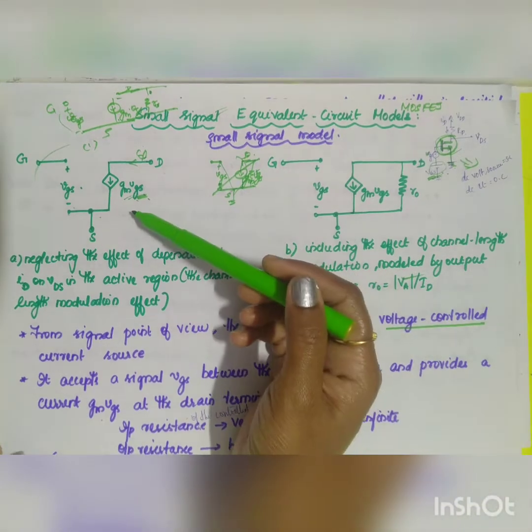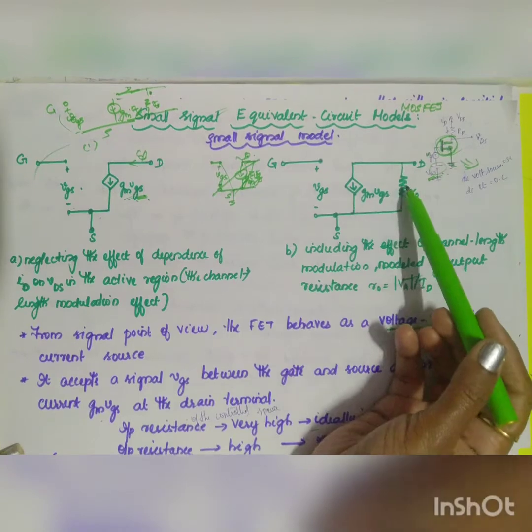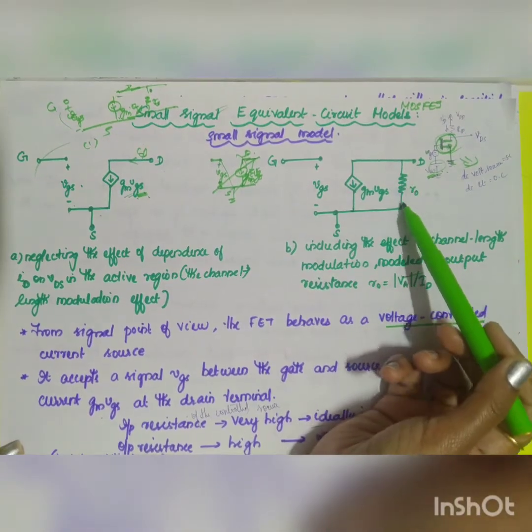From this diagram what you can infer? Is it a voltage control device? Yes, the output current is depending on your input voltage, that is VGS. It is acting as a voltage control device.